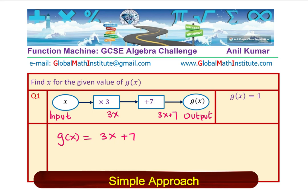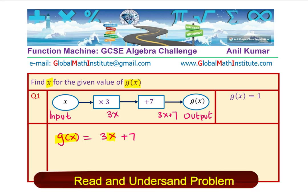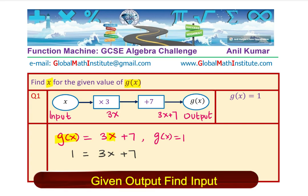Now, the question is, find the value of x, this value, for the given value of g(x). In this case, we are given that g(x) is equal to 1. We can substitute this value right there for g(x). What the equation becomes? It becomes 1 equals to 3x plus 7. That is what it really means. We are given the output, find the input.